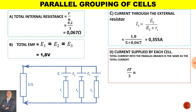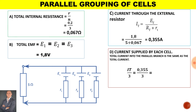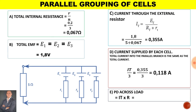However, how much will the current be through each branch? If we add up I1 plus I2 plus I3 it should give us the total current. Because the values of each cell are identical, we can say the total current divided by three cells, meaning there is 0.188 amps flowing through each branch. To calculate the potential difference across the load resistor, it will be the current flowing throughout the circuit multiplied by the value of the load resistor. Therefore the potential difference across the load is 1.775 volts.